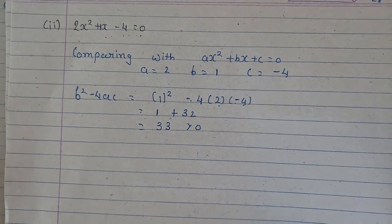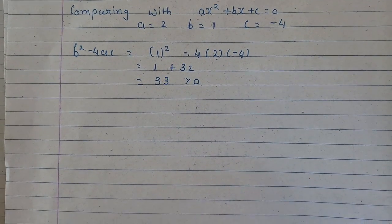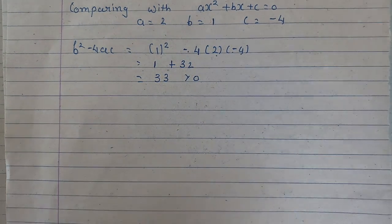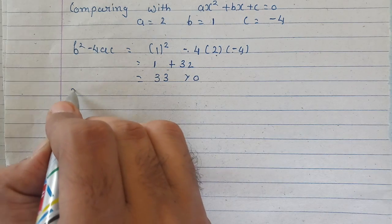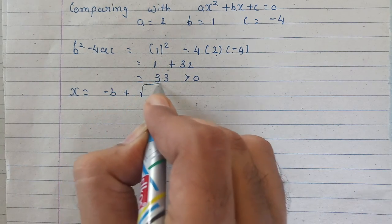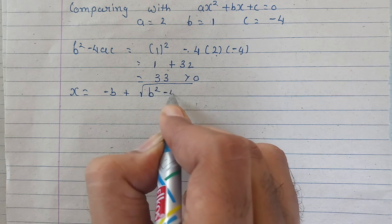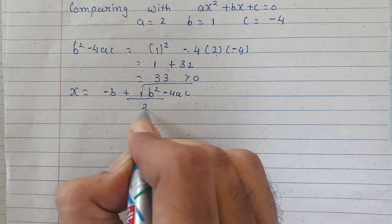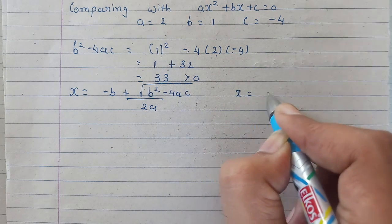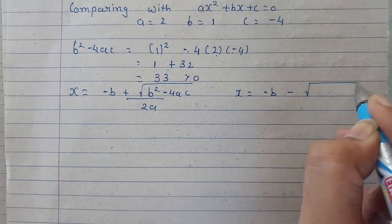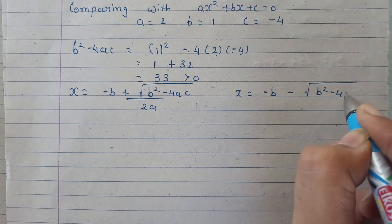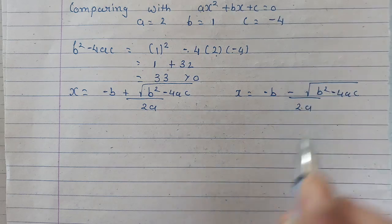Now its roots exist. We have to find these roots. So the first root is minus b plus under root b square minus 4ac upon 2a. And the second one is minus b minus under root b square minus 4ac upon 2a.